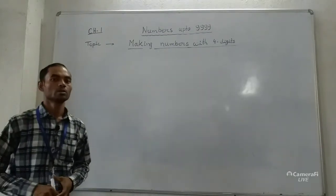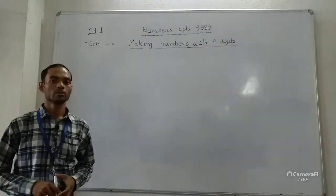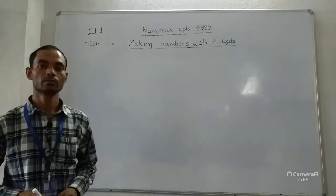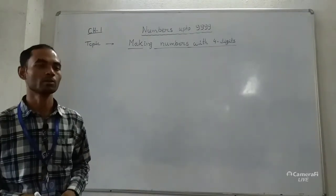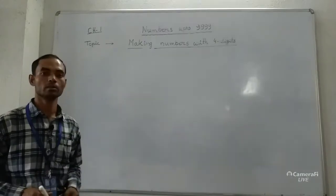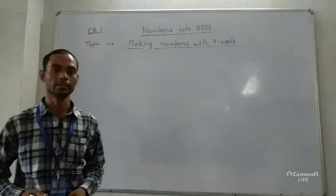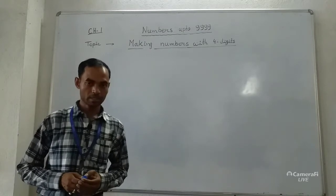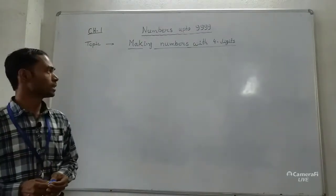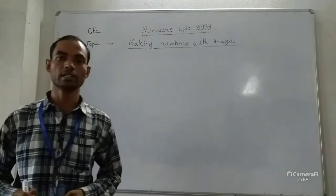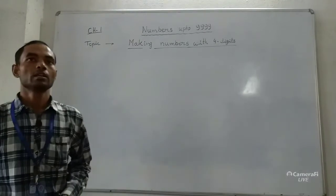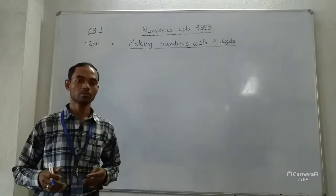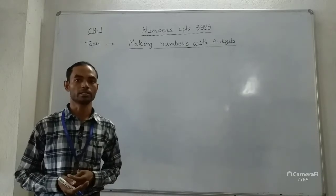Hello everyone. Today we are going to discuss the topic of making numbers with 4 digits, from chapter one: numbers up to 9999. In this topic we will discuss how, if 4 digits are given, you can prepare 4-digit numbers.